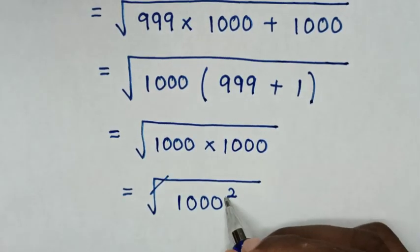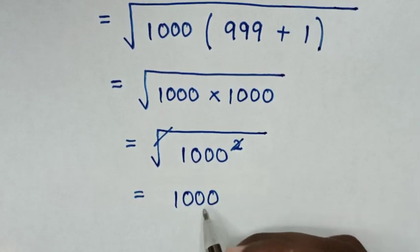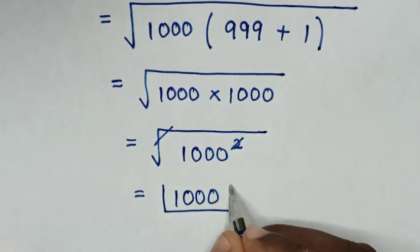Then this square root will cancel with this square. So it will be equal to 1000. So this is our final answer.